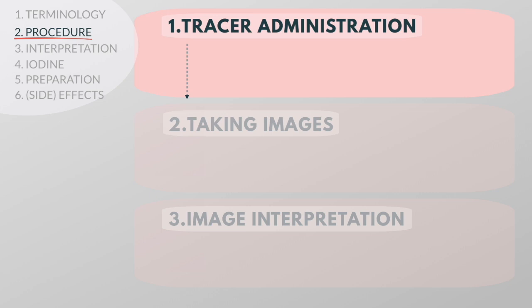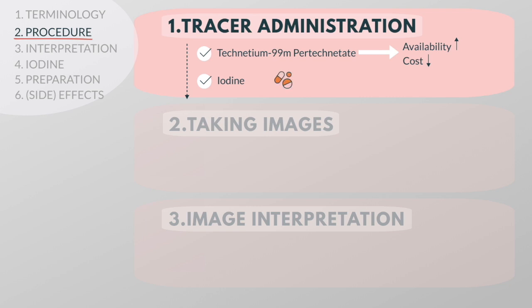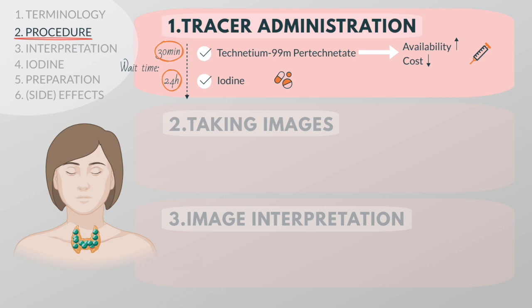The tracer used in this test is either technetium or radioactive iodine. Technetium is more widely used than iodine because of its availability and cost. You will either swallow a dose of iodine 24 hours before the scan, or be given technetium intravenously in your arm 20 to 30 minutes before the scan. This wait time is necessary to allow the tracer to be taken up by the thyroid gland and emit radiation, so the camera can measure how much tracer the thyroid absorbs from the blood.